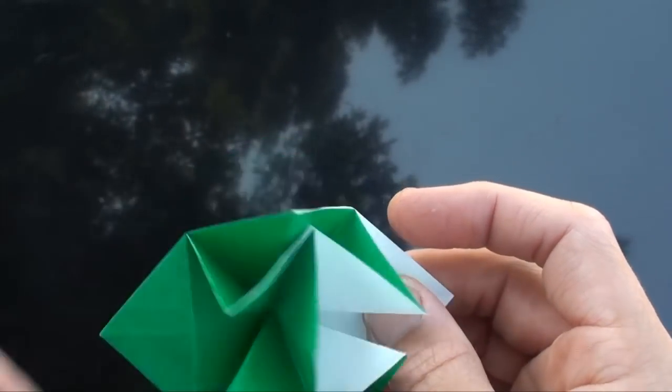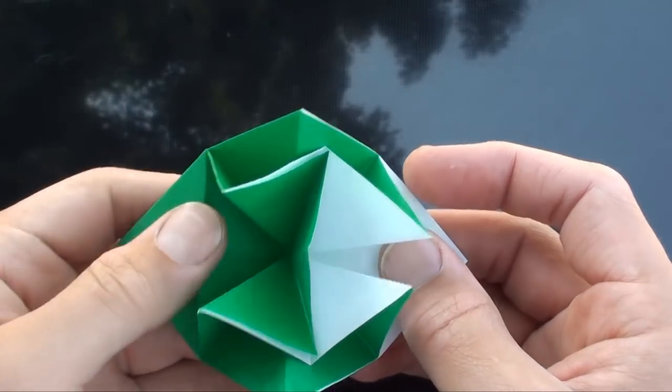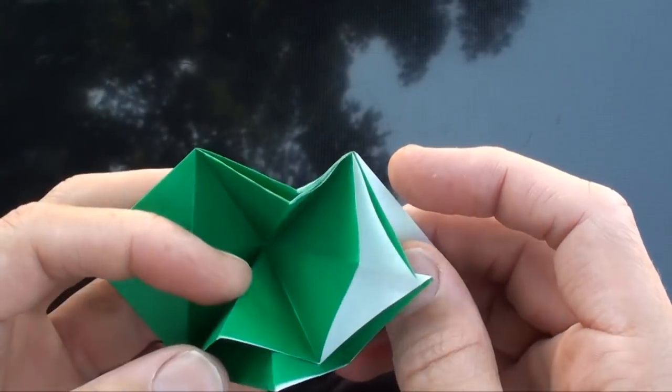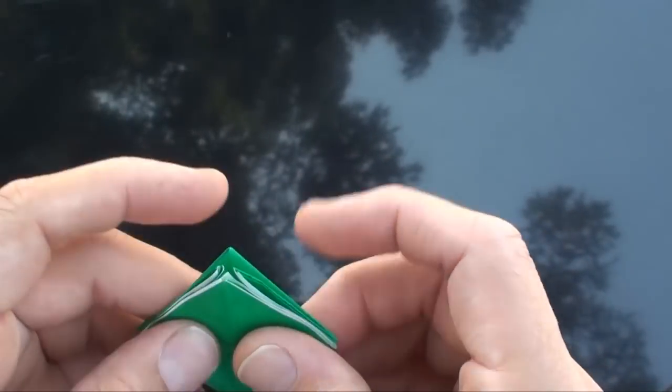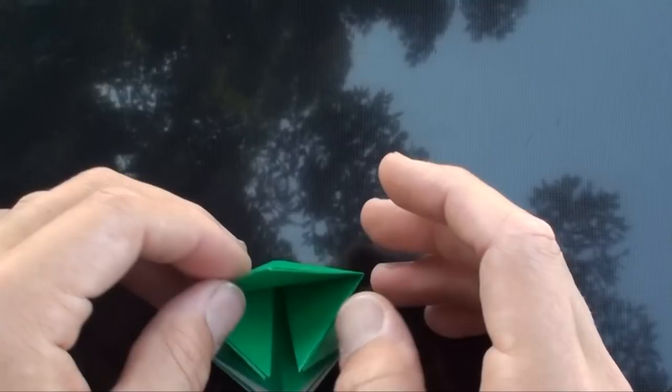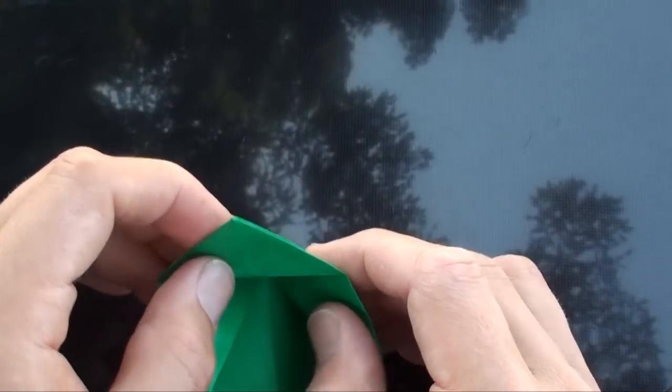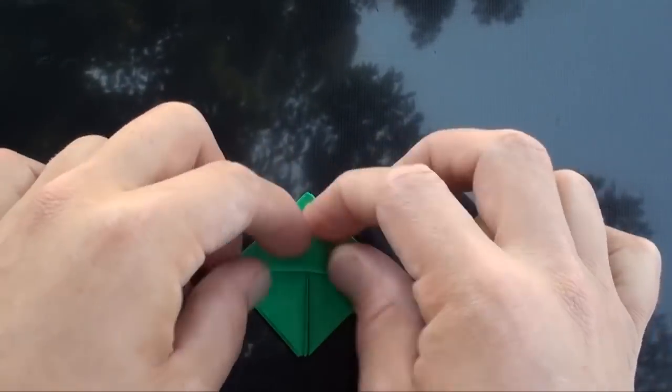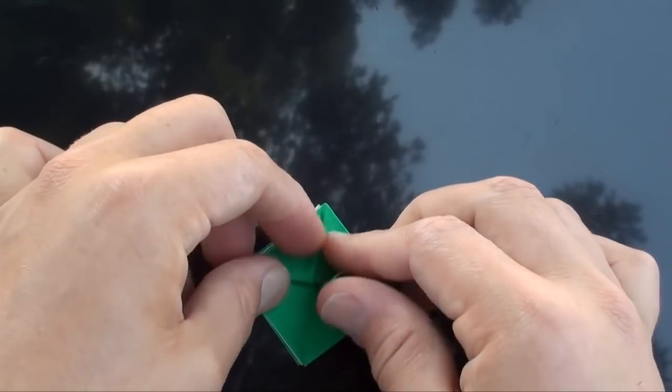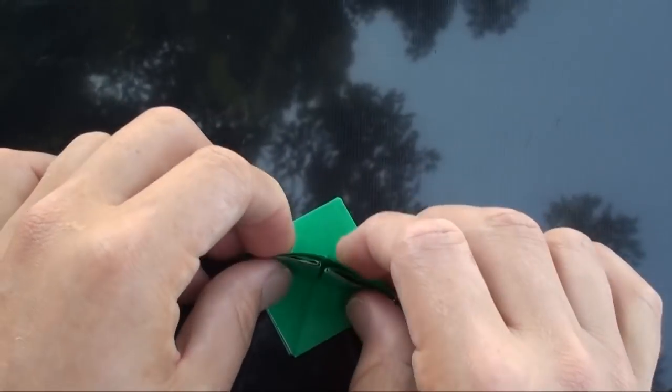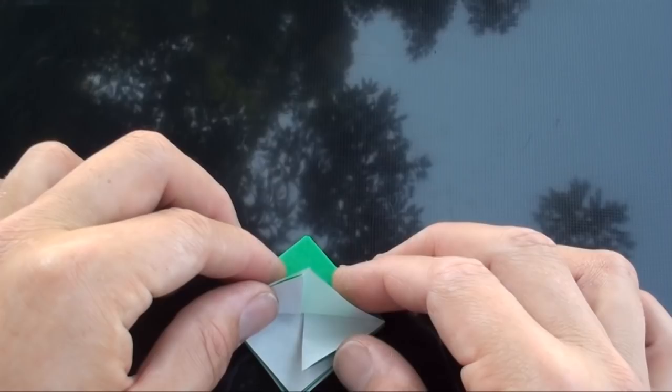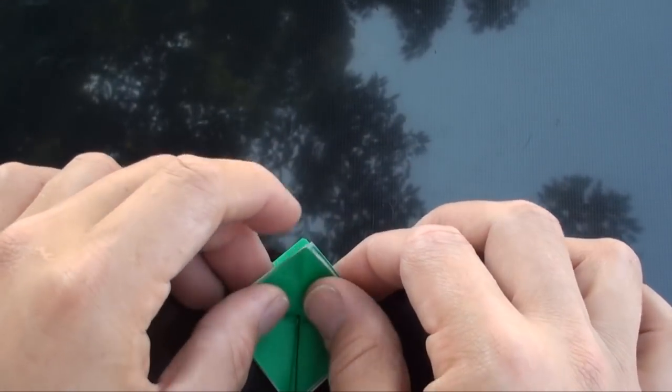Now to turn this thing into the Cyclops pop-up monster, what we do is fold this up and that up. And turn it over. We're going to fold all the remaining corners up like this.